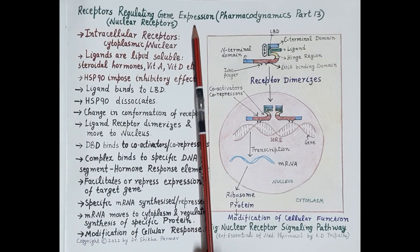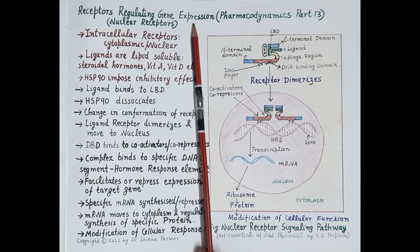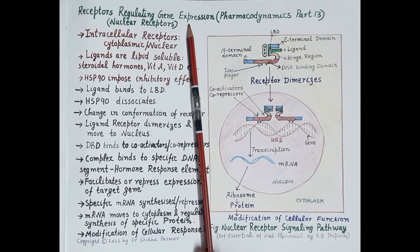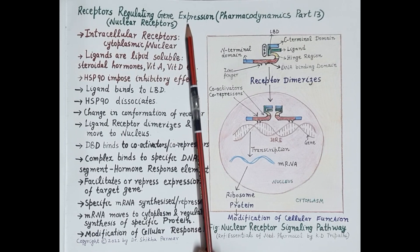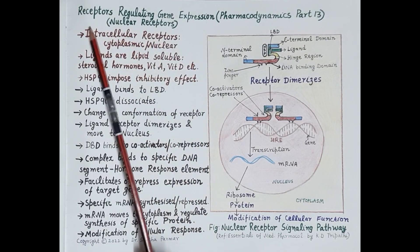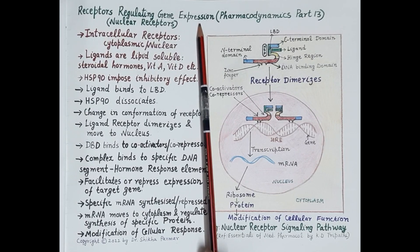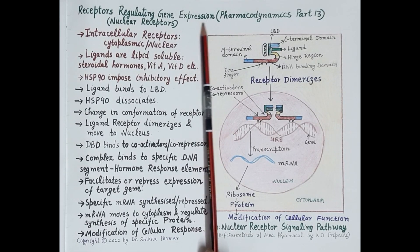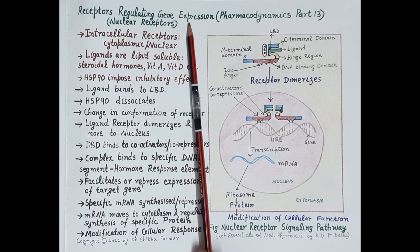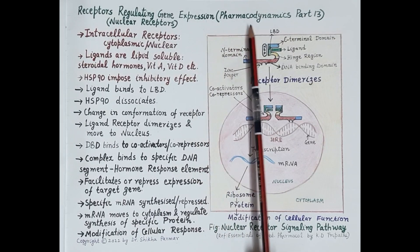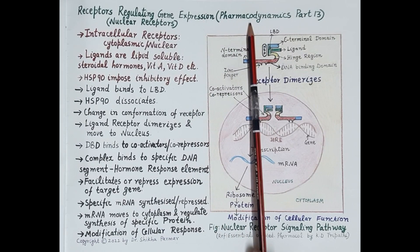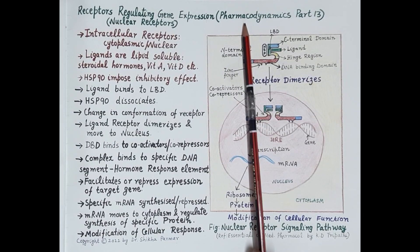Hello students. After discussing G-protein coupled receptors, ligand-gated ion channels, transmembrane enzyme-linked receptors, and transmembrane JAK-STAT binding receptors, in today's video we are going to study the fifth and last category of transducer mechanisms — that is, receptors regulating gene expression. These receptors either facilitate or inhibit the expression of specific genes, and thus they modulate or alter the response of a cell. This video is the 13th in the series of videos on pharmacodynamics.